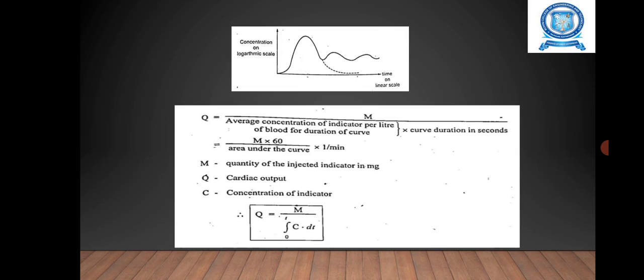Here M represents the quantity of injected indicator in mg. Q represents the cardiac output. C represents the concentration of indicator. Therefore, Q = M / ∫₀ᵗ C dt.